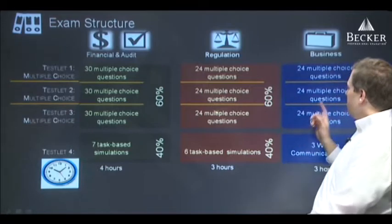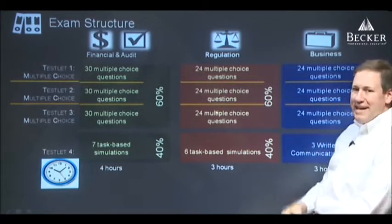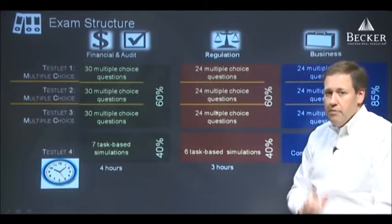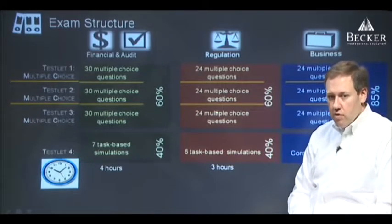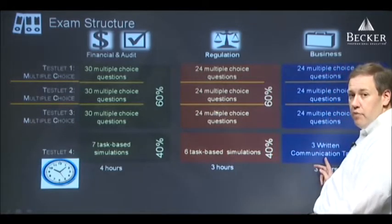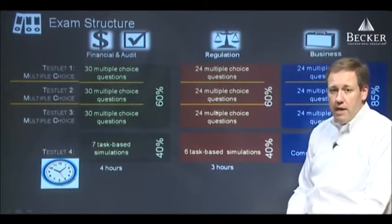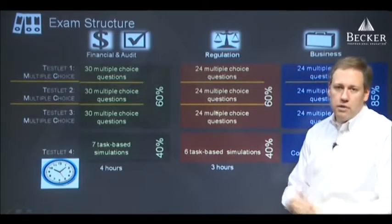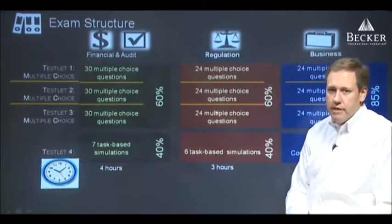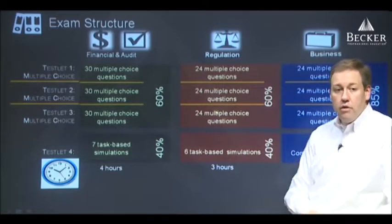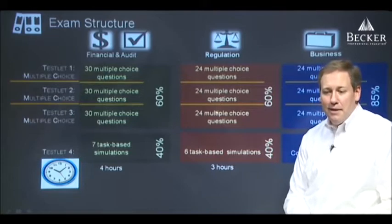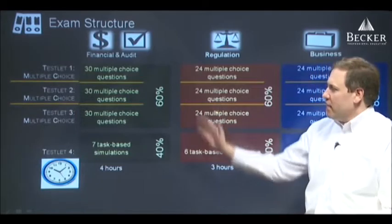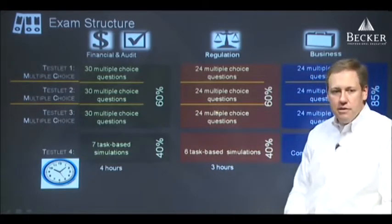Business is different. The first part is identical to regulation — it starts with 72 multiple choice questions and three testlets — but that's 85 percent of the business score. The remaining 15 percent comes from written communication. It's the only portion of the CPA exam that tests a candidate's ability to write — to communicate using the written word. So to summarize: financial and audit are four hours each, and regulation and business are three hours each.